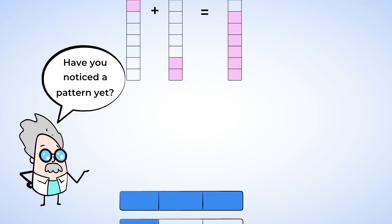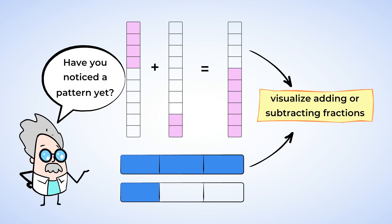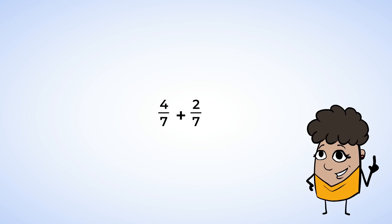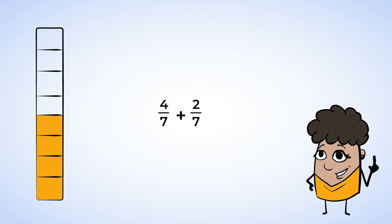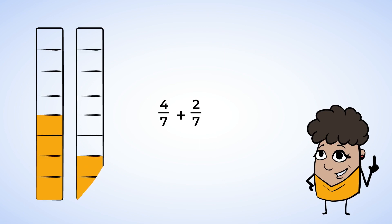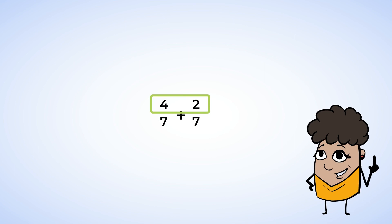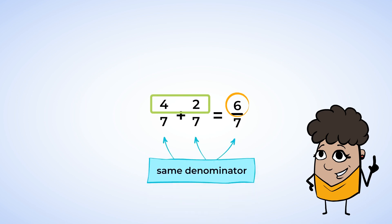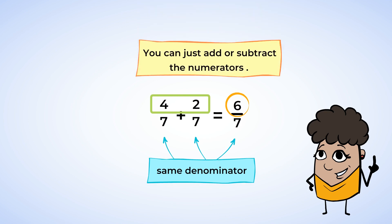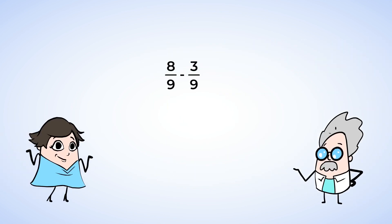Have you noticed a pattern yet? The blocks and numbers help us visualize adding or subtracting fractions, but you might have noticed a pattern with the numerators. Let's look at four-sevenths plus two-sevenths. We could draw out a block and shade the pieces, but instead we can just add the four and the two together to get six. Four-sevenths plus two-sevenths is six-sevenths. The denominator stays the same because we're dealing with sevenths. So when fractions have the same denominator, we can just look at the numerators and add or subtract those. For example, eight-ninths minus three-ninths is five-ninths because eight take away three is five.